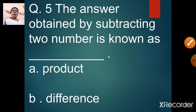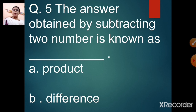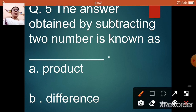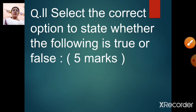Question number 5: the answer obtained by subtracting two numbers is known as dash. Option A: product. Option B: difference. Tell me children — what answer do we get when we subtract two numbers? Option B, difference. The answer obtained by subtracting two numbers is known as difference. So we have done 5 filling-the-blanks questions for 5 marks — that was your first head question.